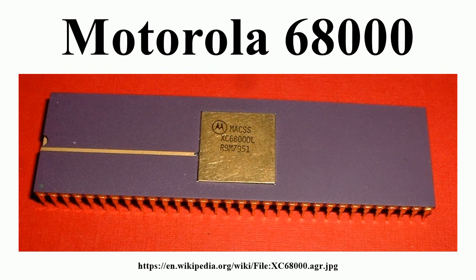The original MC68000 was fabricated using an HMOS process with a 3.5 micrometer feature size. Formally introduced in September 1979, initial samples were released in February 1980, with production chips available over-the-counter in November. Initial speed grades were 4, 6, and 8 MHz. 10 MHz chips became available during 1981, and 12.5 MHz chips by June 1982. The 16.67 MHz version, the fastest version of the original HMOS chip, was not produced until the late 1980s.